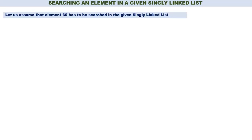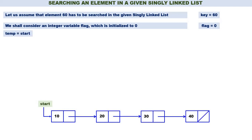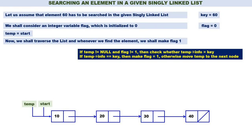Now let us discuss another case where the element is not found. Let us assume that element 60 has to be searched in the given single linked list. Key is equal to 60 and flag is initialized to 0. This is our linked list. Temp is equal to start. Now we shall traverse the list and whenever we find the element we shall make flag equal to 1. Same logic.